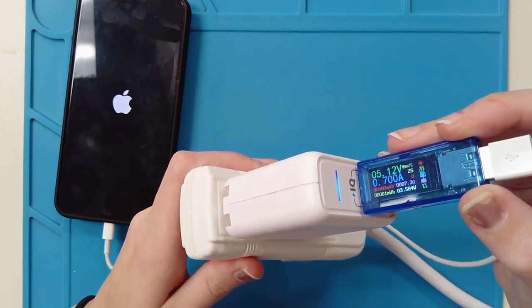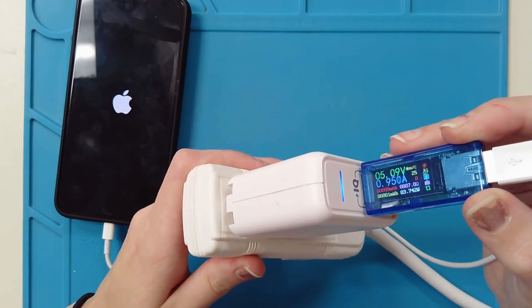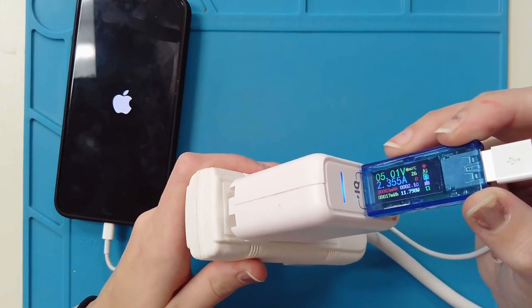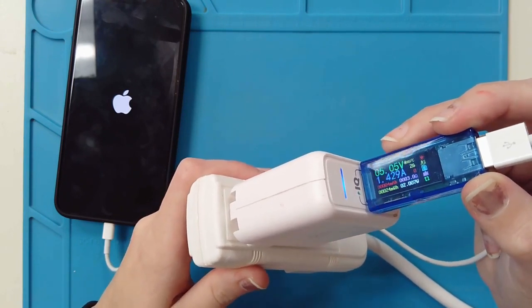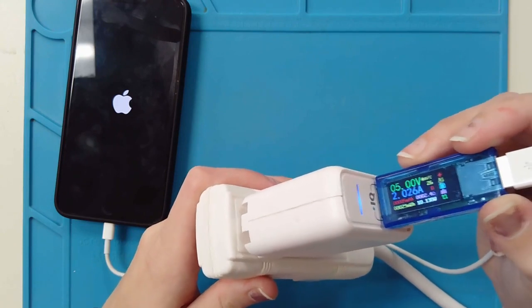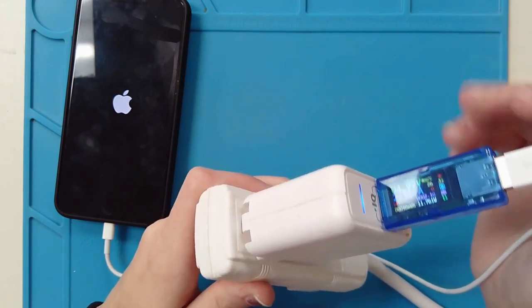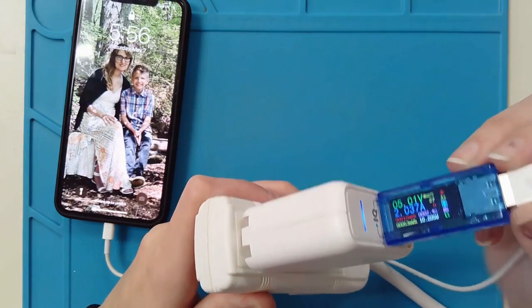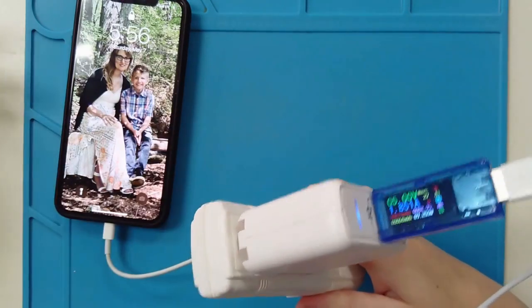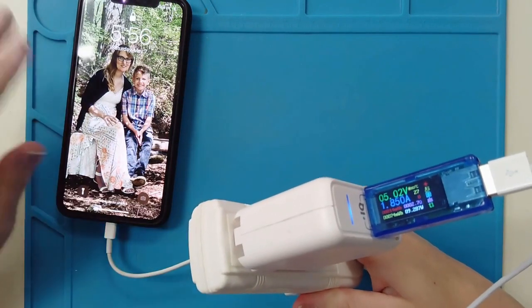As it is powering on, you see the increase in amperage. It's maxing out at 2.35, 2.4, dropping back down. And that's okay. When a phone is functioning, you may have it pull more.